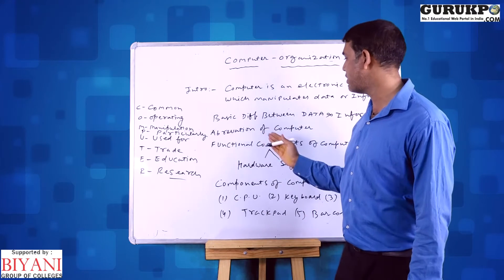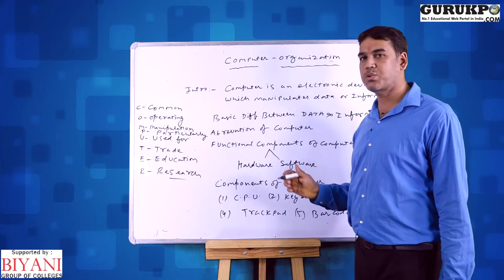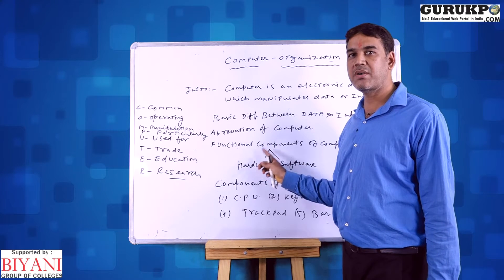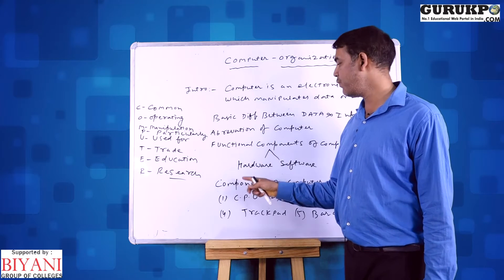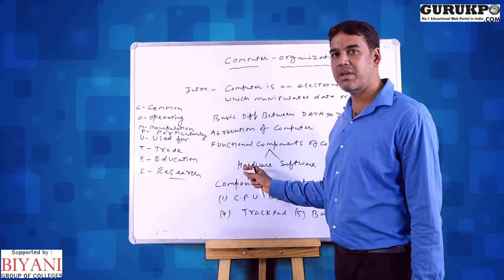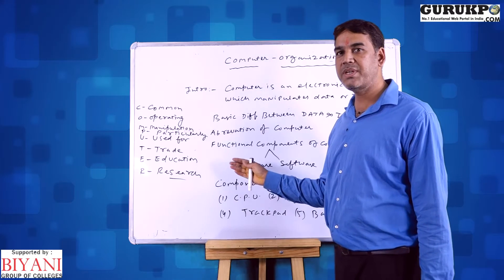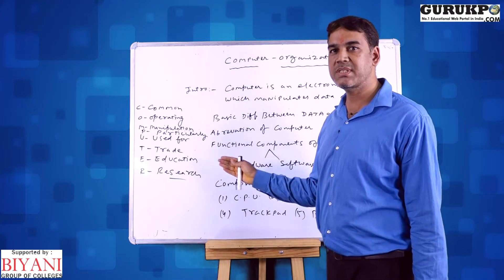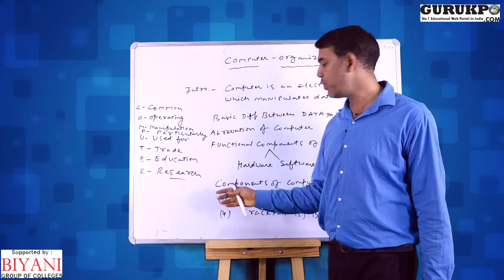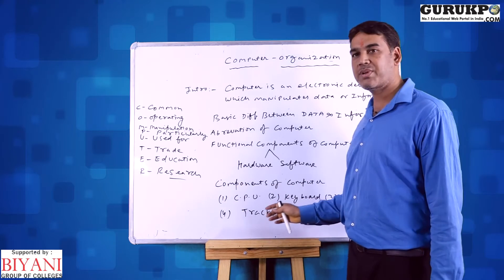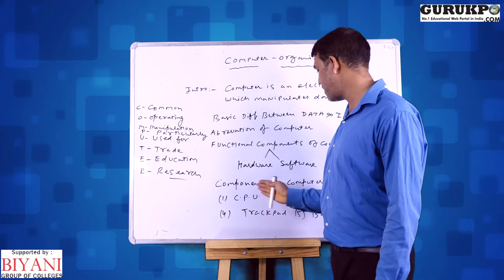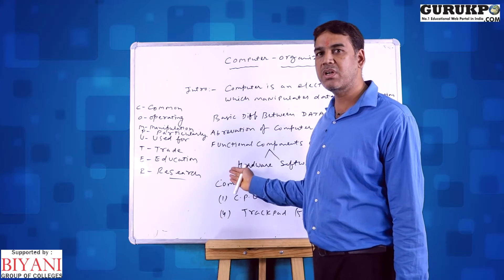Now I am discussing about the functional components of the computer. The computer is basically divided into two parts: one is hardware and another is software. Hardware is basically a physical device which defines the components of the computer. Hardware is divided into two parts: first is input device and second is output device. Input devices include components like keyboard, mouse, trackpad, and barcode reader, etcetera.